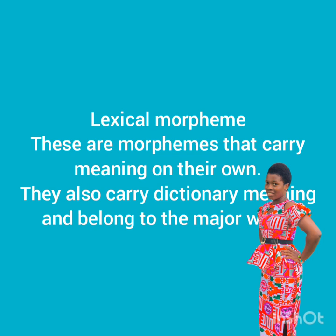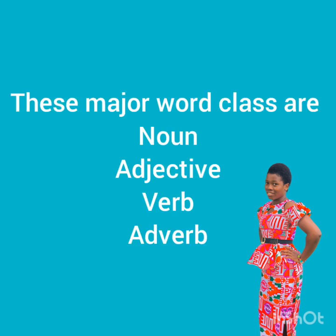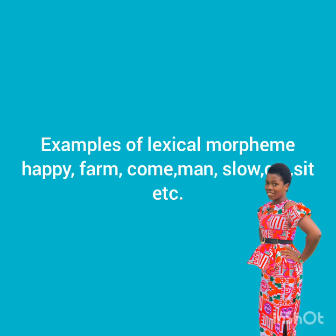Lexical morphemes are morphemes that carry meaning on their own. They carry dictionary meaning and belong to the major word class. The major word classes are: noun, adjective, verb, and adverb. Examples of lexical morphemes include: 'happy,' 'fun,' 'come,' 'man,' 'slow,' 'go,' 'set,' etc. You can see that all of these belong to a word class.